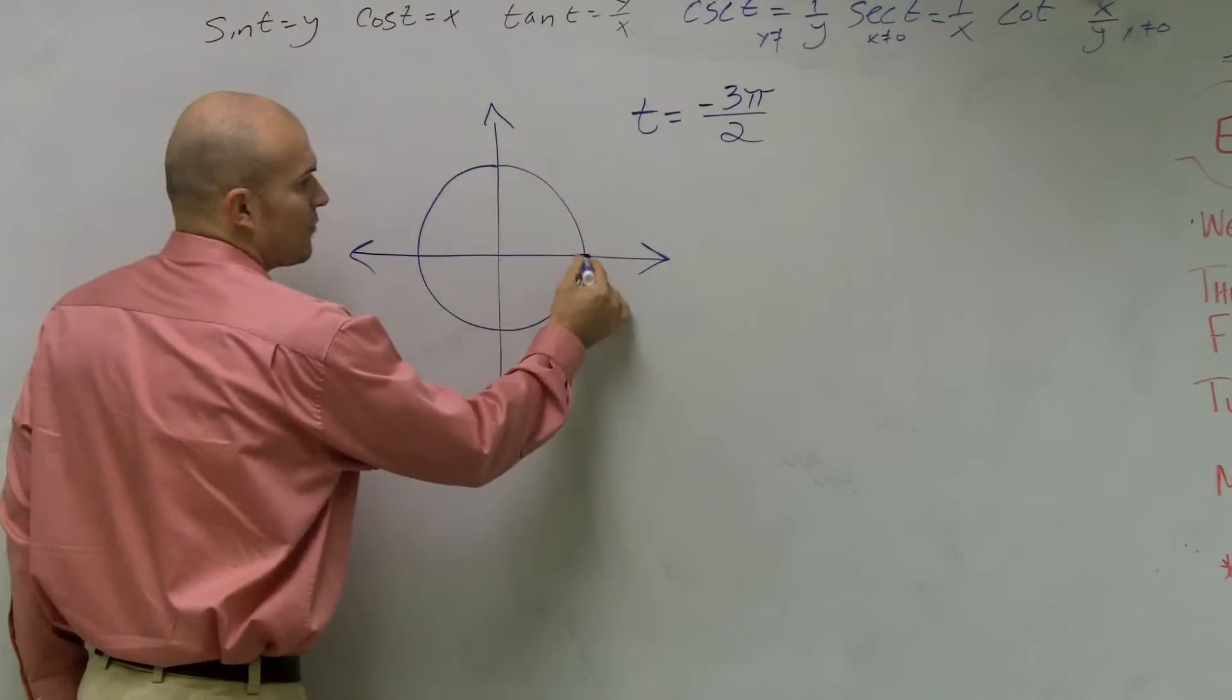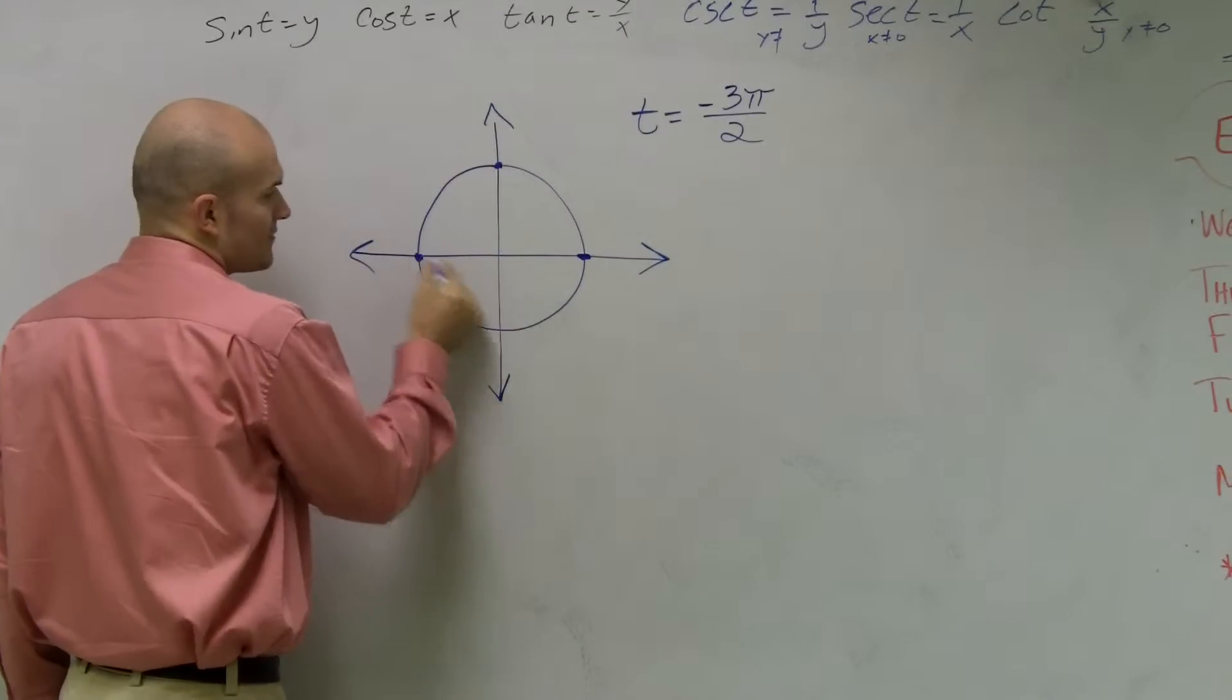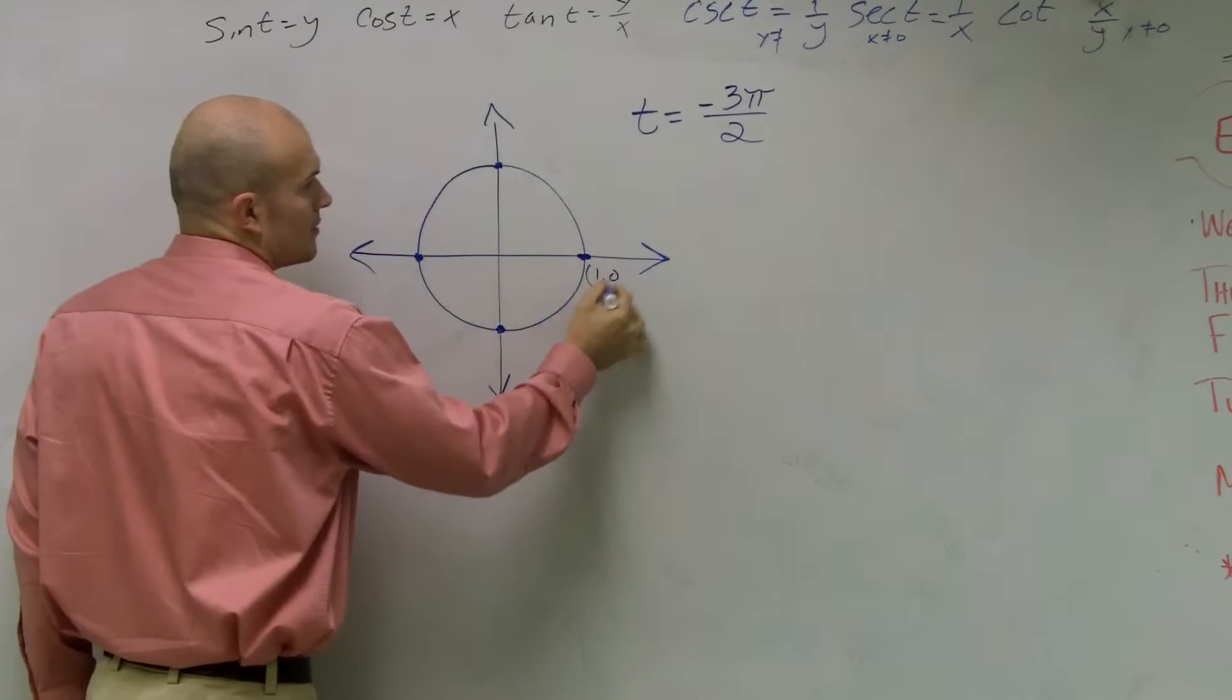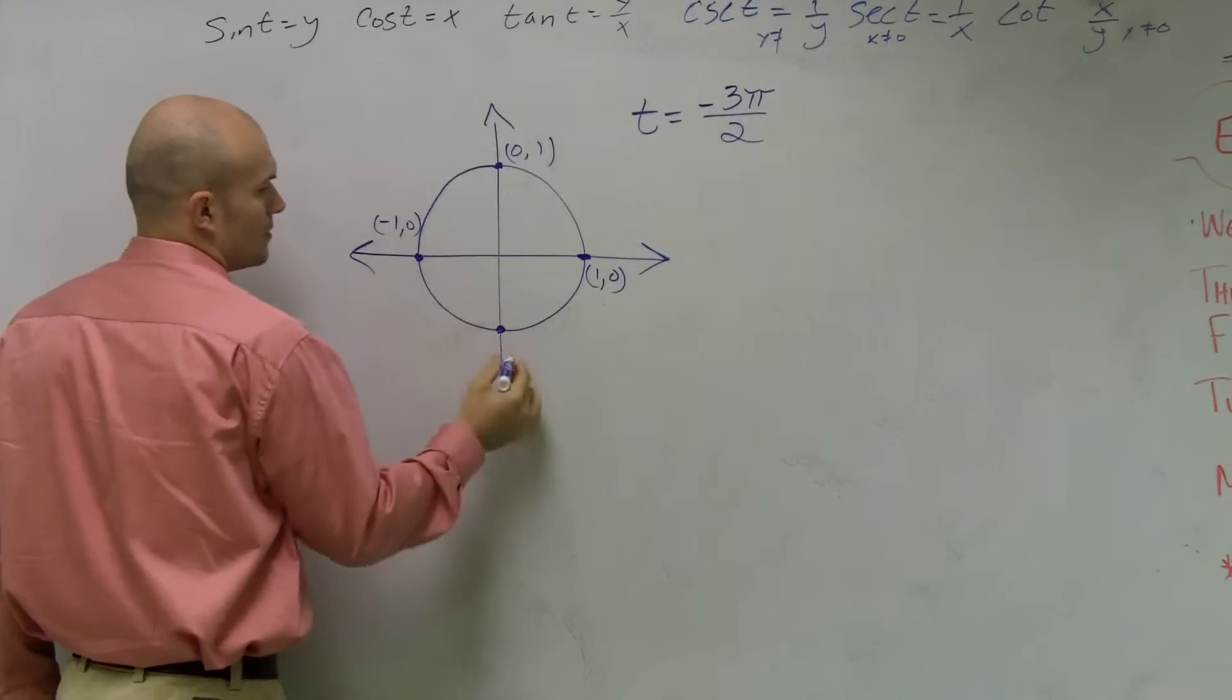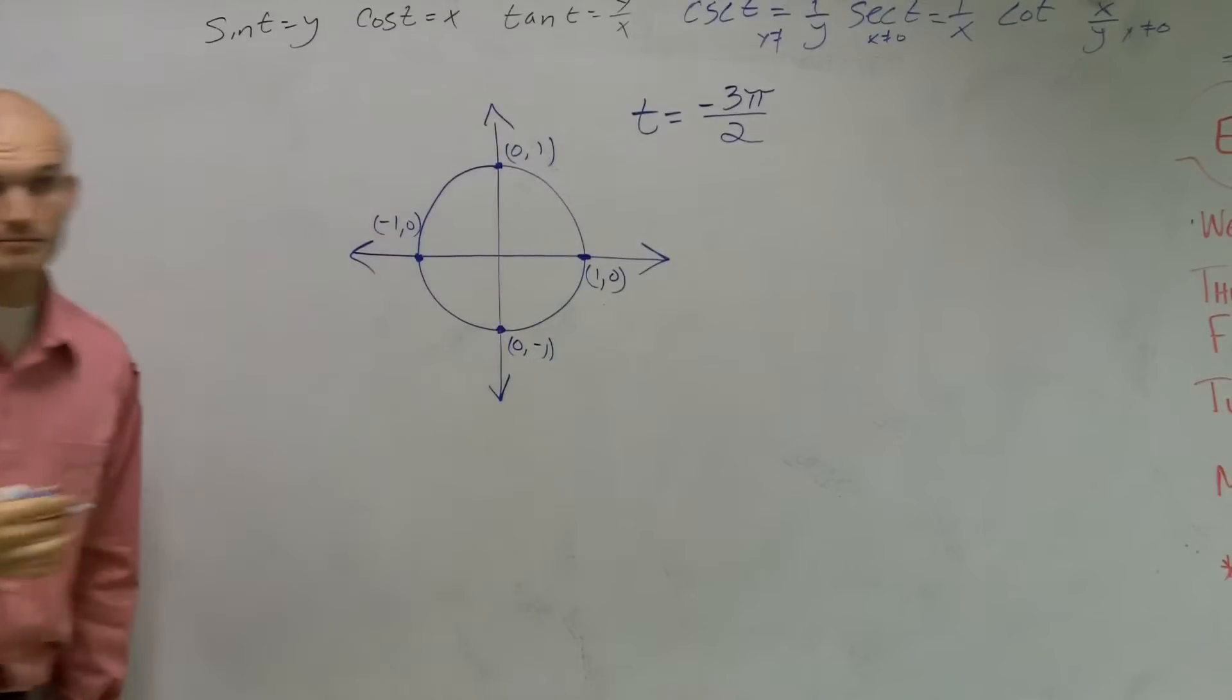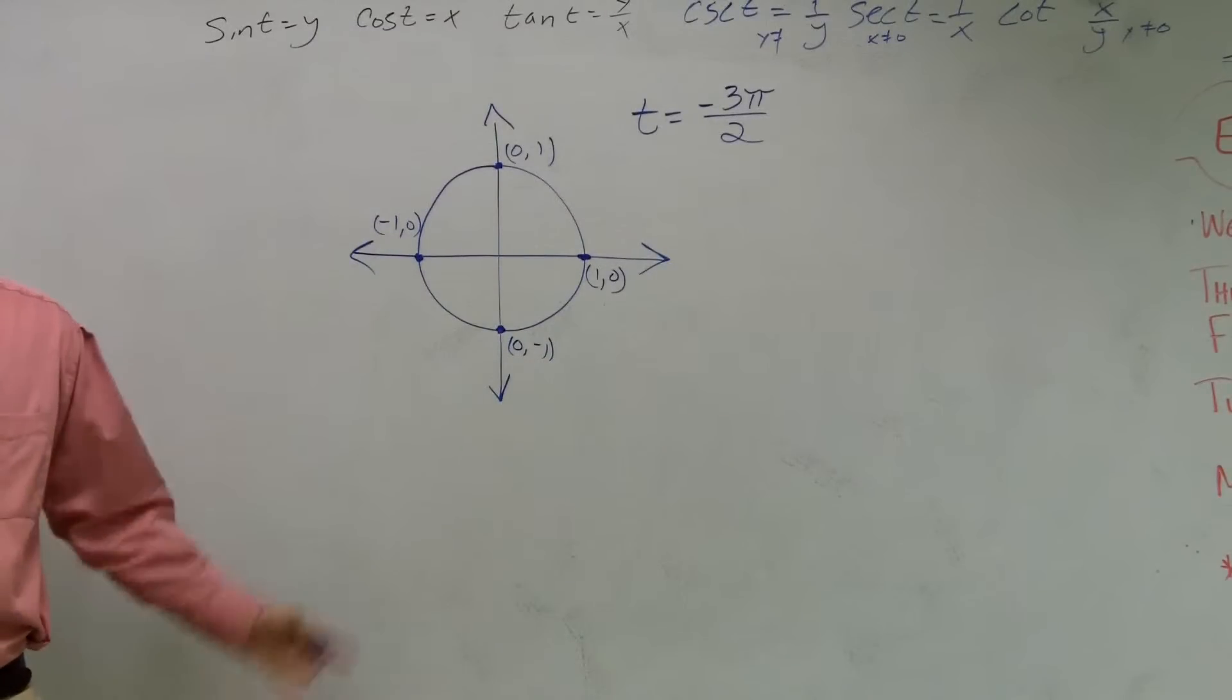A unit circle has four given points that we know right off the bat. One comma zero. Those are like your four points that give us a unit circle.